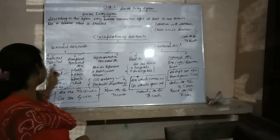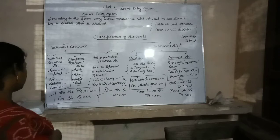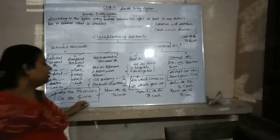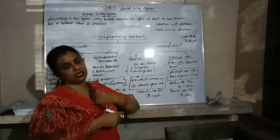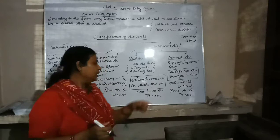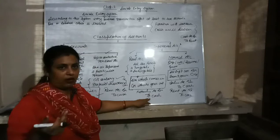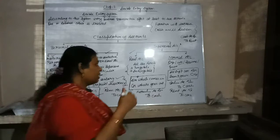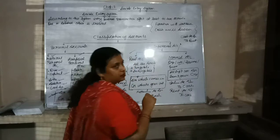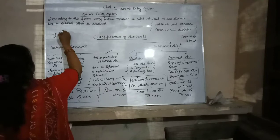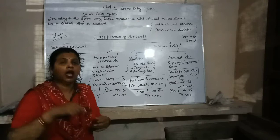Whether it is a natural person, artificial person, or representative personal account, the rule is the same: debit the receiver, credit the giver. For real account: debit what comes in, credit what goes out. For nominal account: expenses and losses are debited, income and gains are credited. These three are the golden rules of accounting. It is compulsory for every commerce student to learn, know, and understand these three accounting rules. Just go through the video at least one or two times and understand it. Thank you.